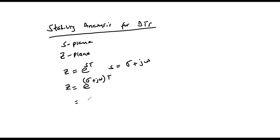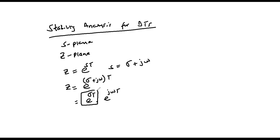This can be broken down into two parts: exponential gamma t multiplied by exponential j omega t. The first term gives us the magnitude, while the second term constitutes the angle.